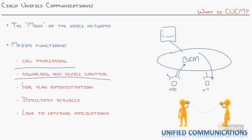When somebody picks up and dials 9, something has to say: that's an outside line. Are you allowed to make an outside call? Are you allowed to dial that long-distance number? All of that goes into the CUCM.